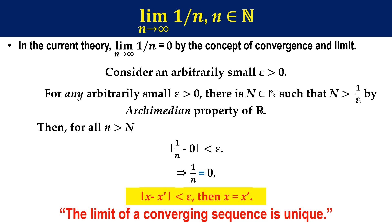However, the proof was shown to be flawed as in the previous video. Therefore, we cannot conclude from absolute value of 1 over n minus 0 being smaller than epsilon that 1 over n equals 0.